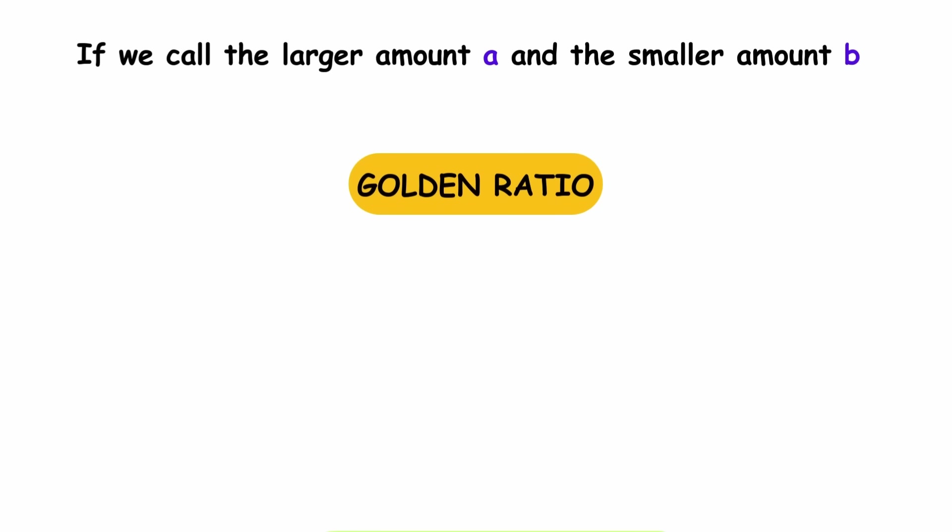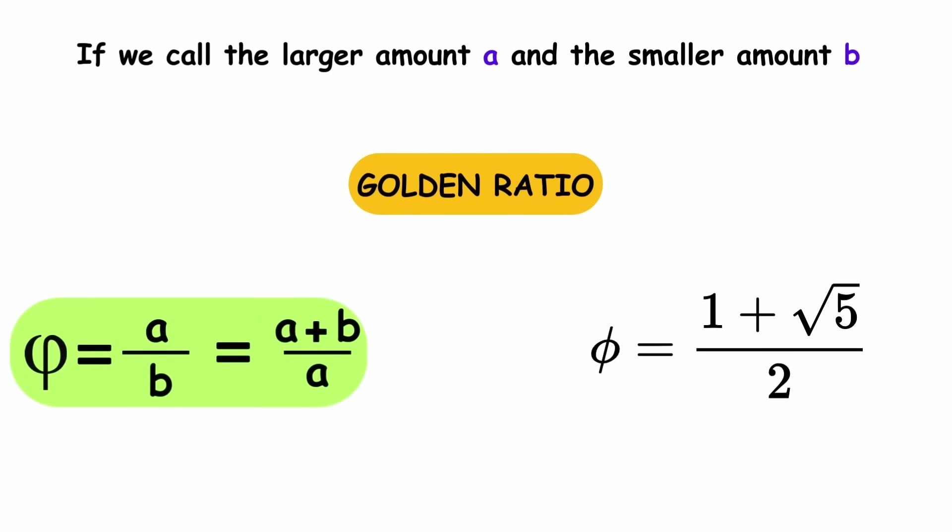If we call the larger amount A and the smaller amount B, the golden ratio can be expressed by this equality. It equals 1 plus square root of 5 over 2, about 1.618.